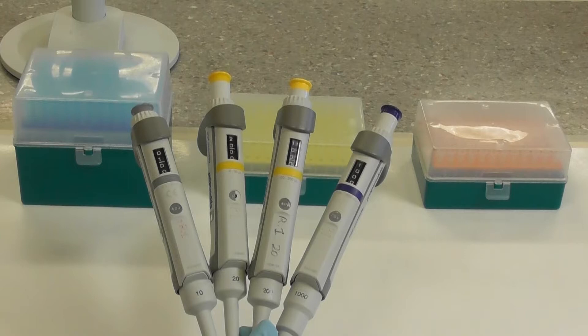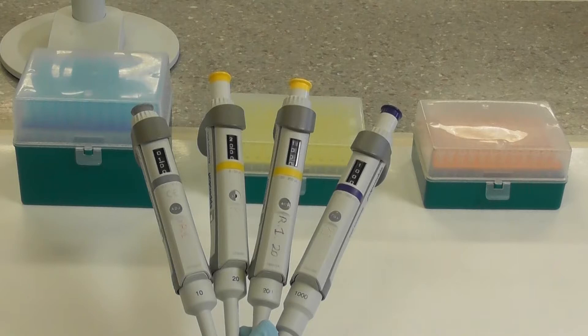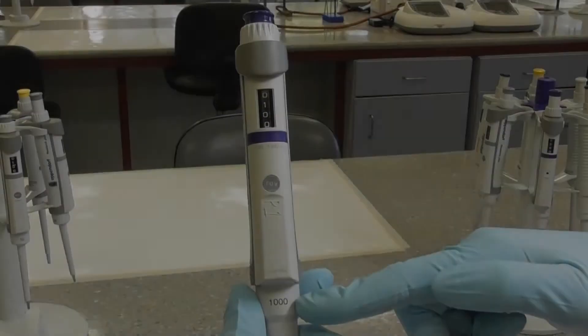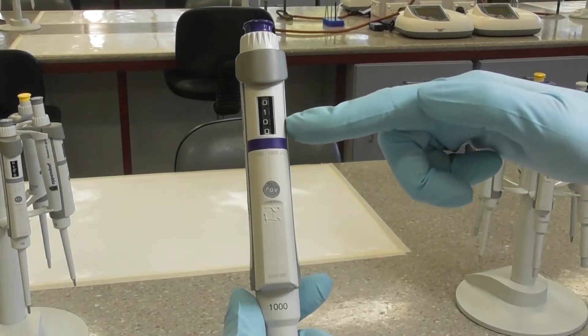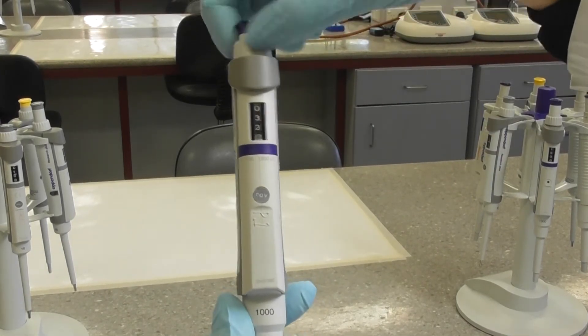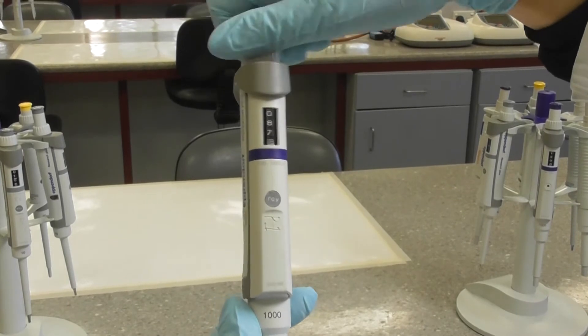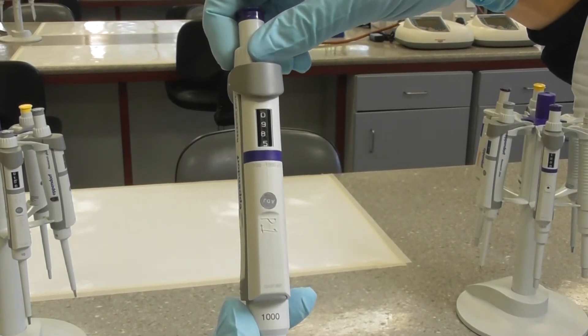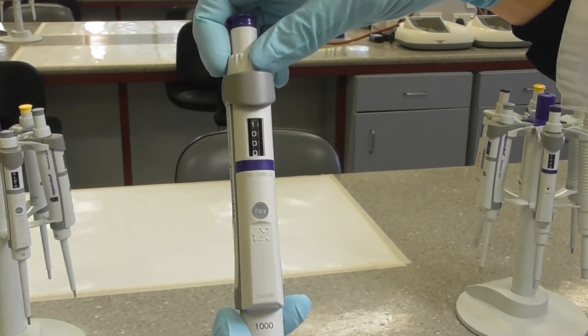The window on the side displays digits to indicate the volume that the pipette will dispense. The 1000 microliter pipette dispenses from 100 microliters up to 1000 microliters. The volume is adjusted by turning the ring at the top.